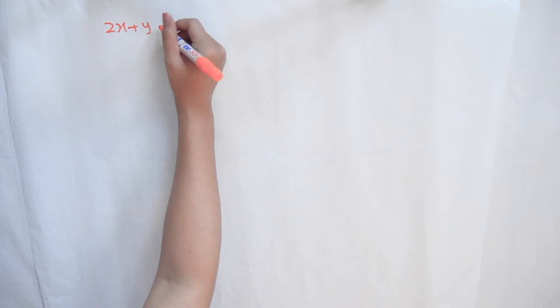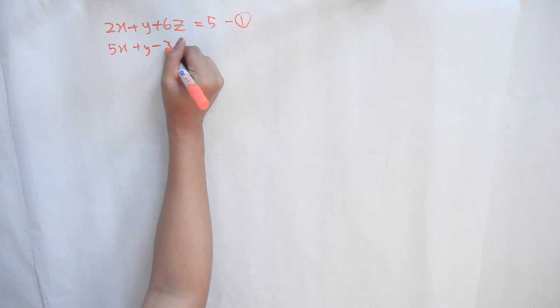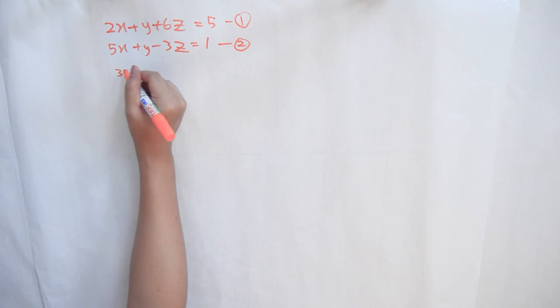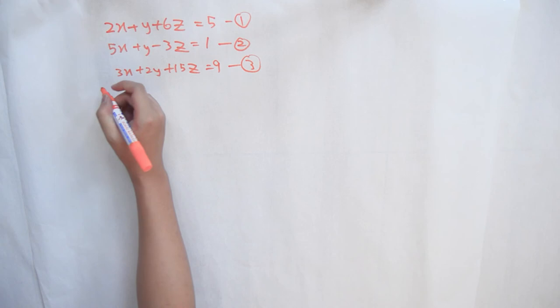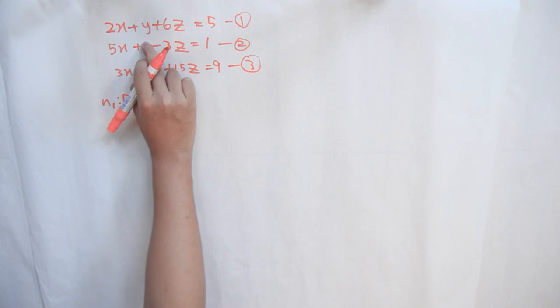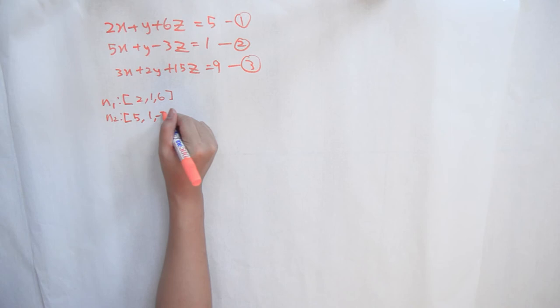We will now solve an example describing a system of three planes. Equation 1: 2x plus y plus 6z equals 5. Equation 2: 5x plus y minus 3z equals 1. Equation 3: 3x plus 4y plus 15z equals 9. We find the normals: N1 equals bracket 2, 1, 6; N2 equals bracket 5, 1, negative 3; N3 equals bracket 3, 2, 15.